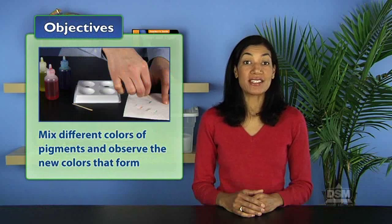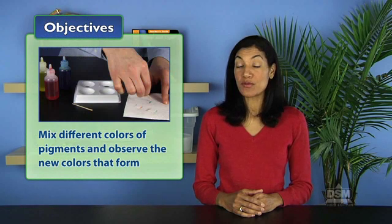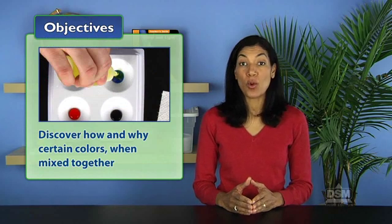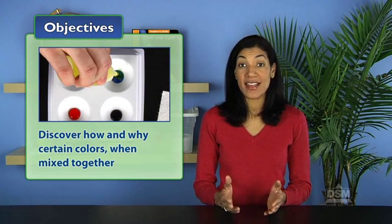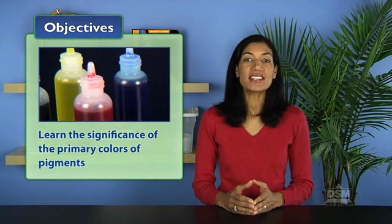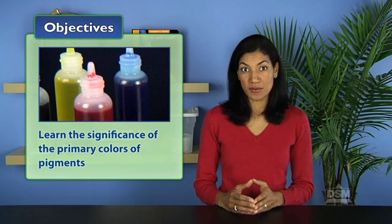In Activity 2, Mixing Pigments, students mix different colors of pigments and observe the new colors that form. They then discover how and why certain colors, when mixed together, form certain other colors. Finally, they learn the significance of the primary colors of pigments. You will need the following materials from the kit.